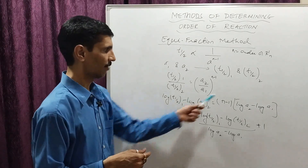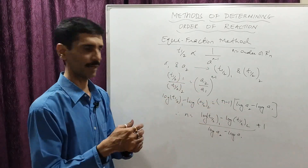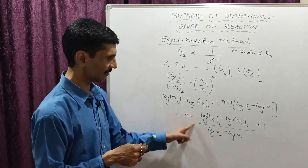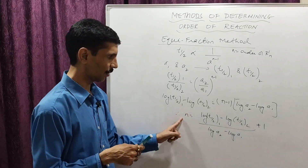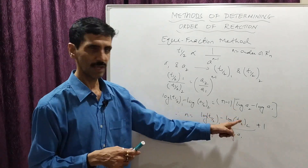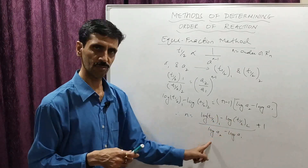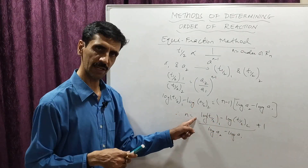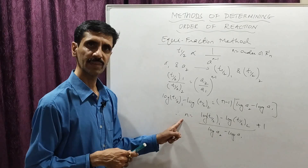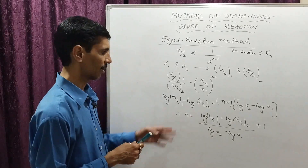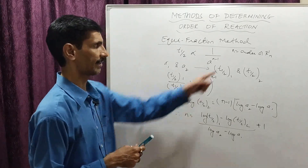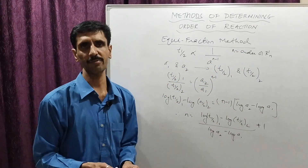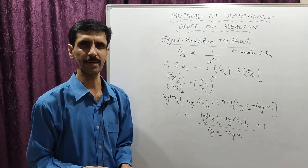Because we are solving for n, that minus 1 becomes plus 1. Using this expression, once we know the T half values and two different initial concentrations, we substitute and get the value of n, which is the order of reaction. In this way, the order of reaction can be easily determined.